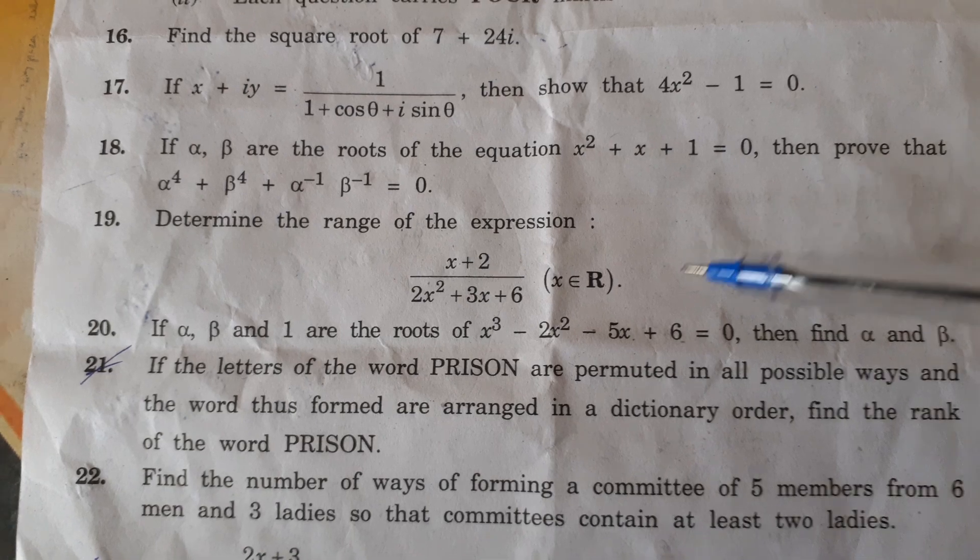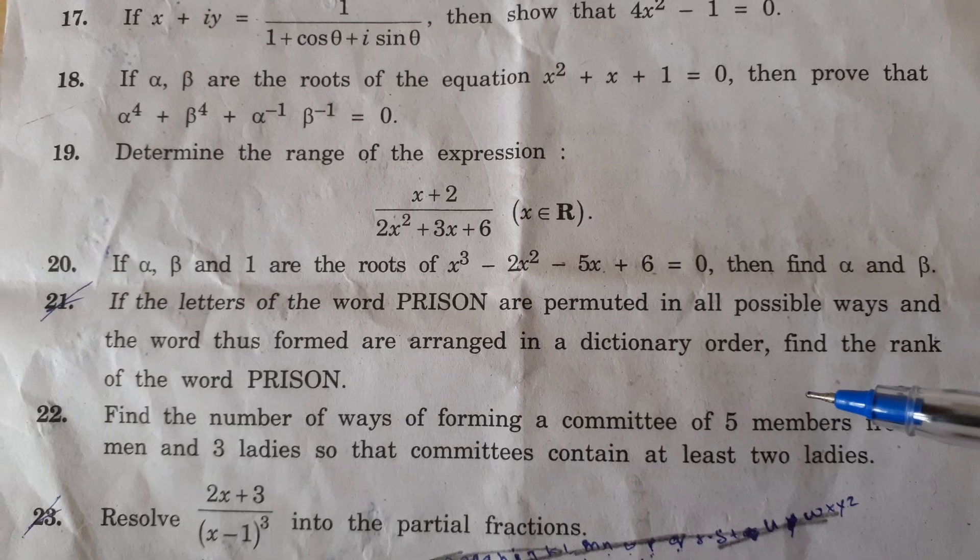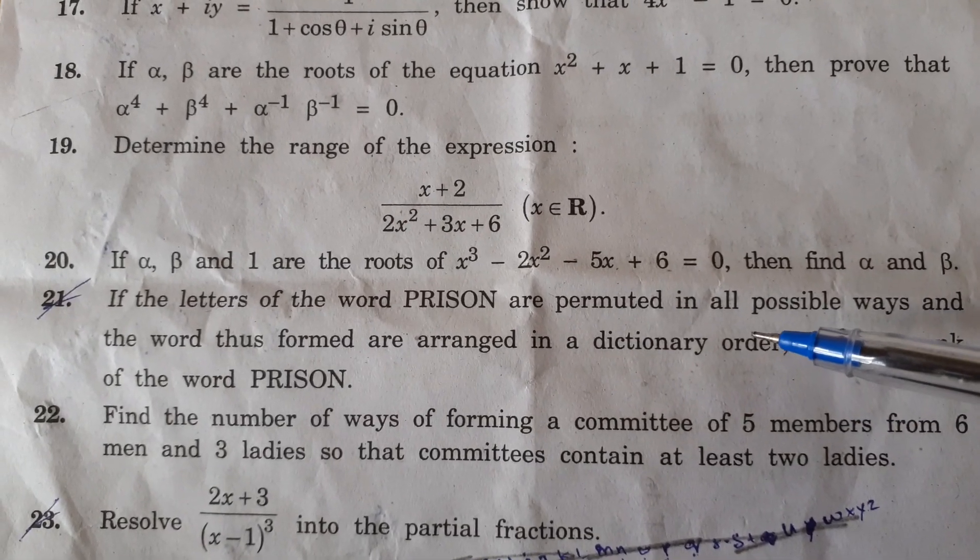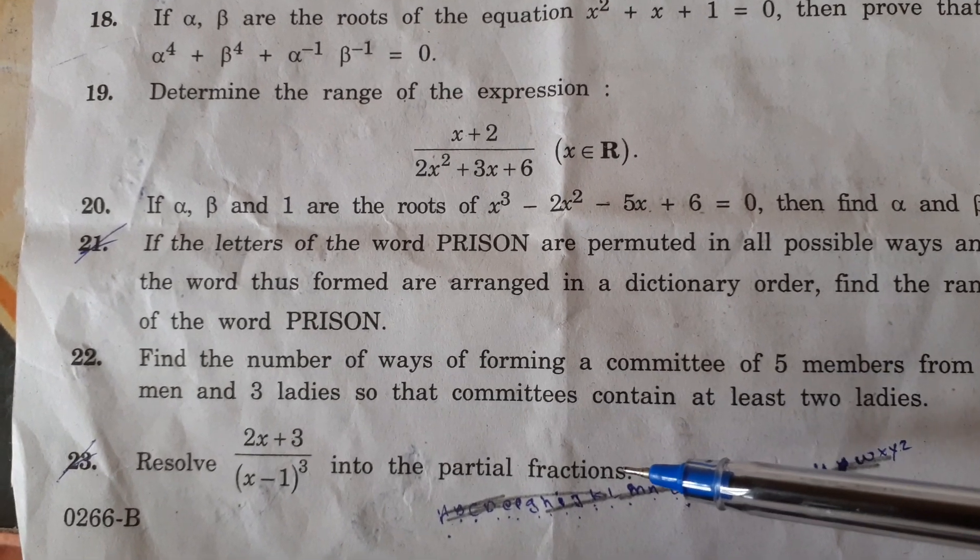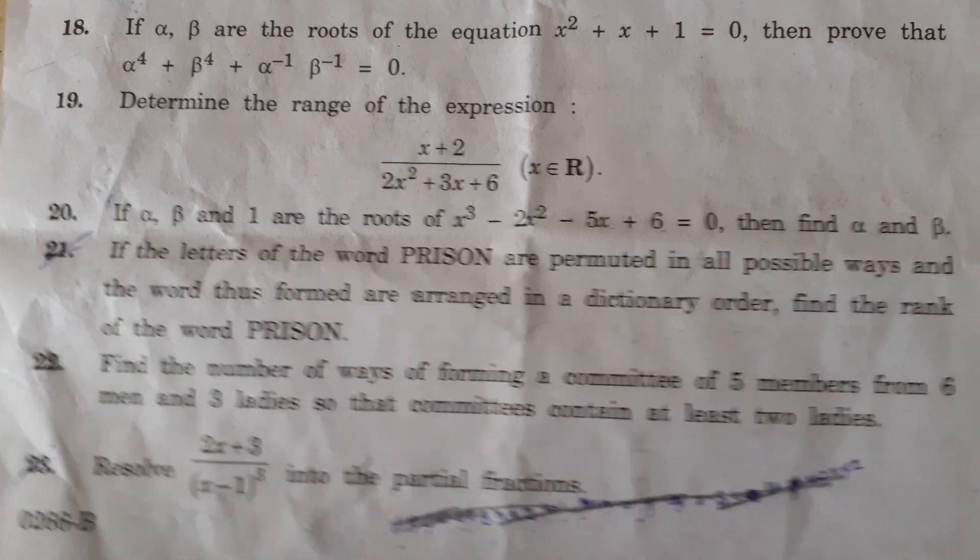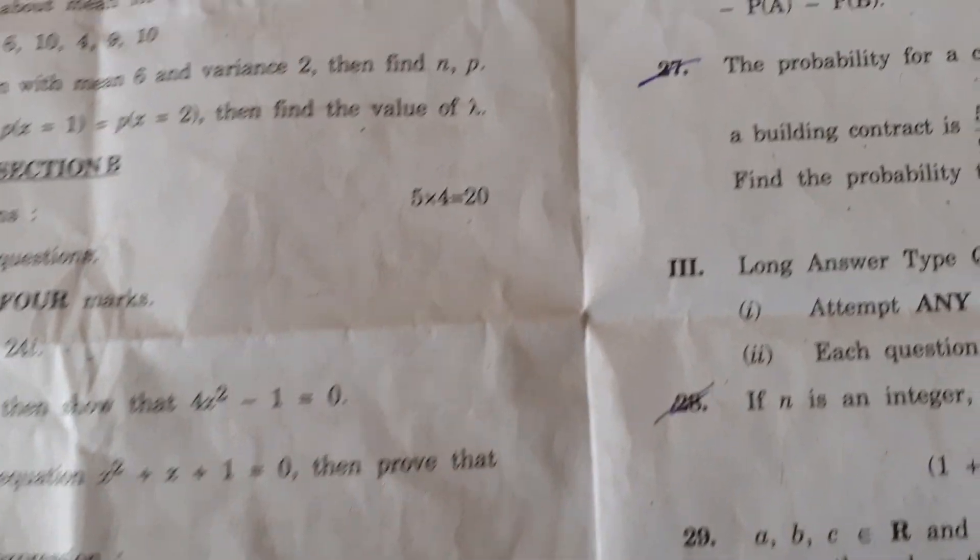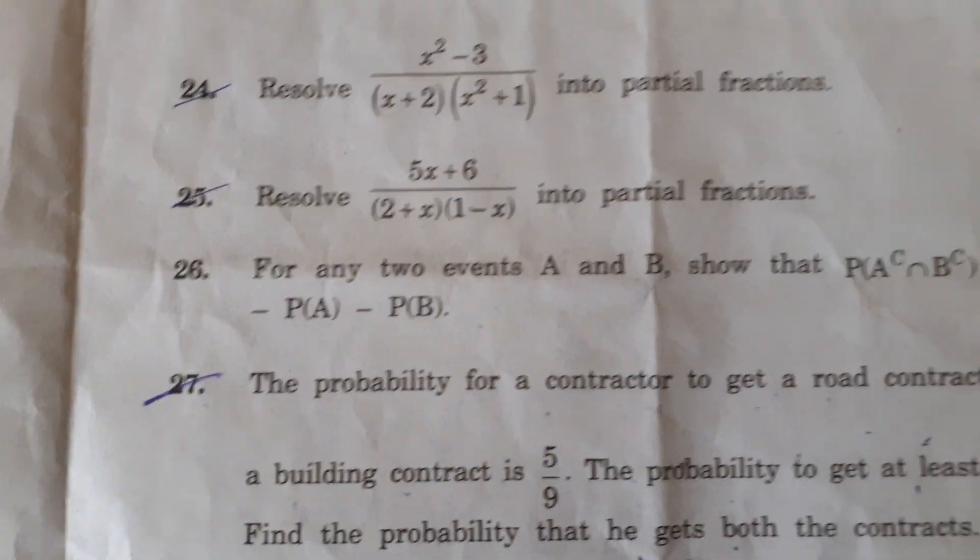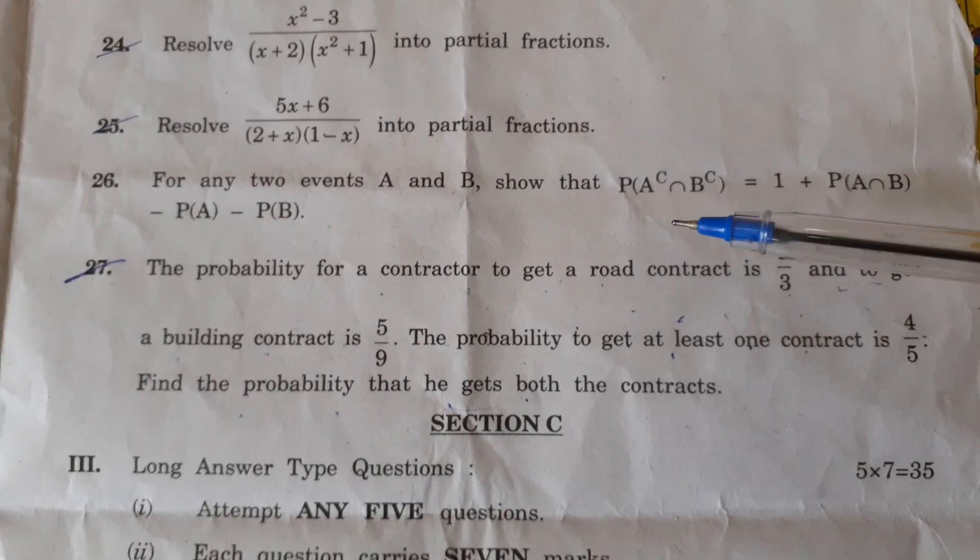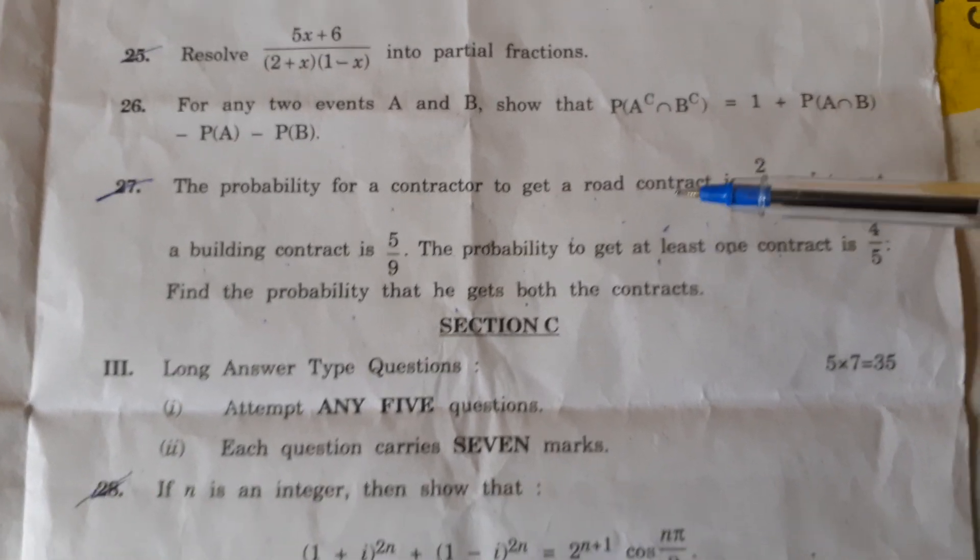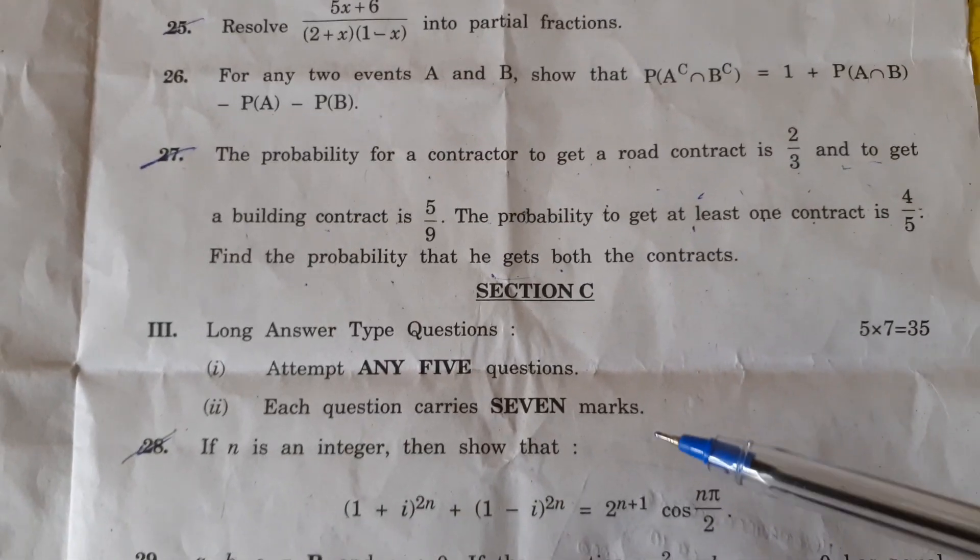19, 20, 21, 22, 23. Next page, 22, 23, question number 24, 25, 26, 27. Out of 12, 5 we have to answer.